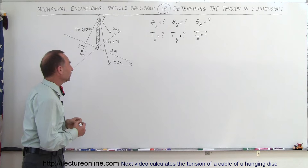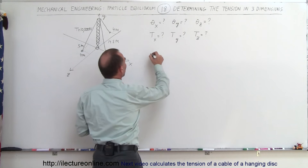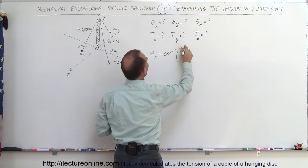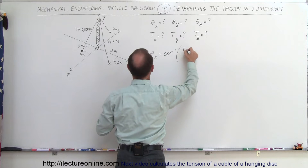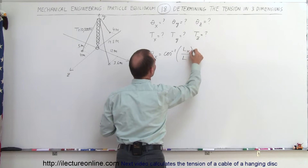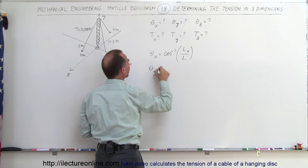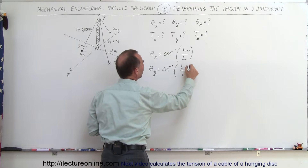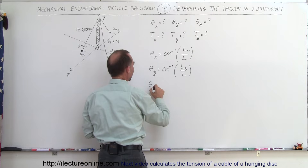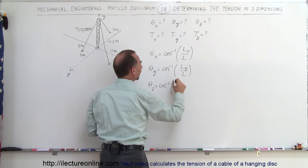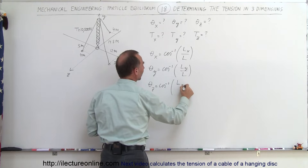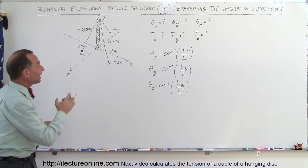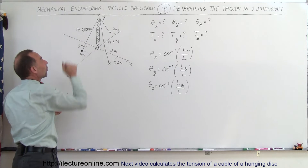We use the direction cosines. By definition, theta sub x is equal to the arc-cosine of the component length in the x-direction divided by the total length. The angle relative to the y-direction is equal to the arc-cosine of the length in the y-direction divided by the total length. And the angle between the line and the z-direction is equal to the arc-cosine of the length in the z-direction divided by the total length.